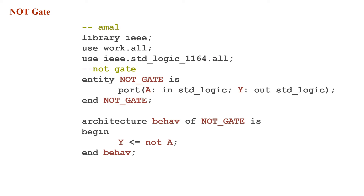Here you can see what a basic behavioral modeling code looks like — it's actually implementing the NOT gate. There are three parts to the code. The first part is called the library declaration. In this part, you just call whatever library files are needed in your code. There are only three lines of code declaring the library files. The top line of code is simply a comment — you can add comments in VHDL using two dashes, followed by your name or the author's name.